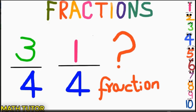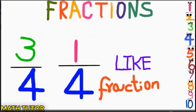What about this: 3/4 and 1/4? What do you think — is it a like or unlike fraction? Here the denominator is 4 for the first fraction, and for the second fraction 4 is also the denominator. Same denominator, meaning it is a like fraction.